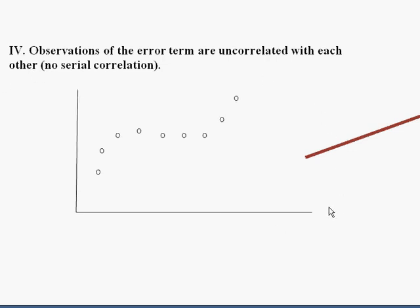So assumption four is that observations of the error term, the error term is the theoretical notion, the residuals are actually what we observe, but the observations of the error term are uncorrelated with each other. Sometimes the fact that they are related we call serial correlation. And so here's a little graph to illustrate what serial correlation does look like and what you don't want to see.